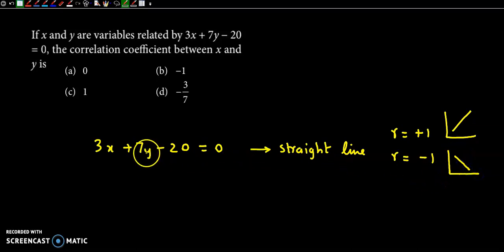Ab is line ka hum slope dhundtay hai, usse humay r ki exact value pata chal jayegi. Ab yeh joh equation hai, this is of the form ax plus by plus c equal to 0. So, or slope hum calculate karthate hai, slope is given by minus of a by b.